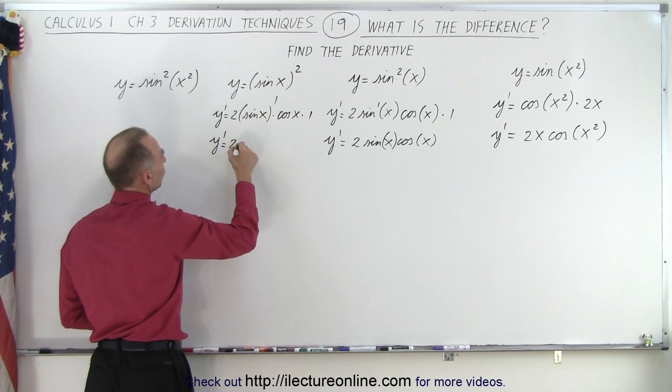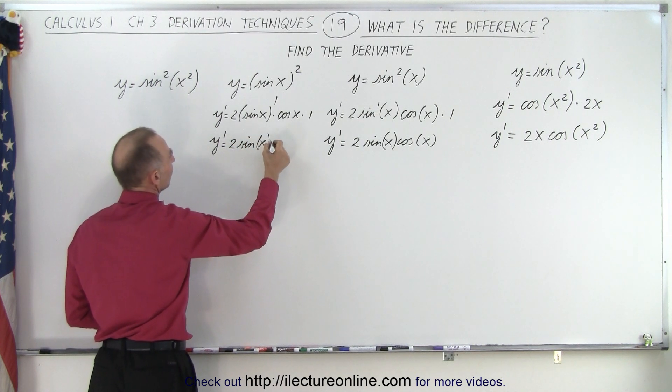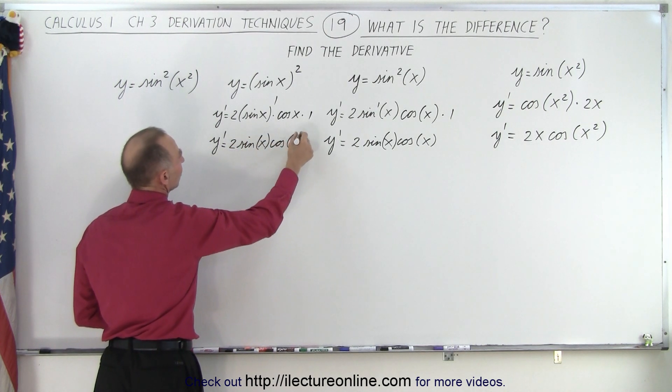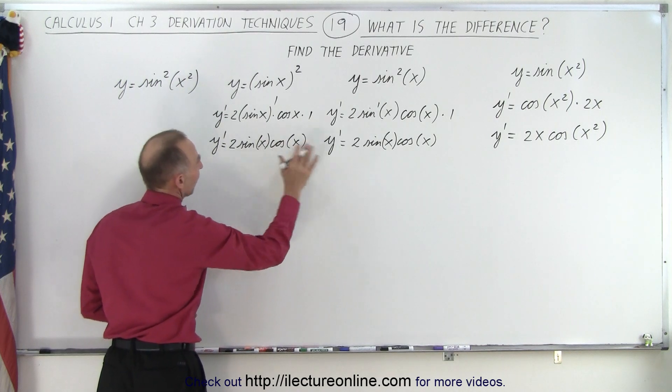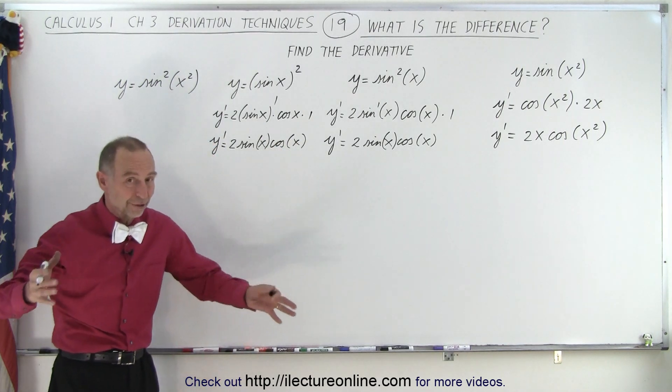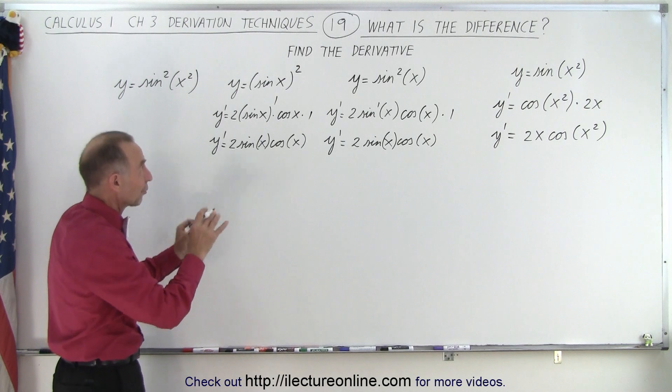y prime equals 2 times the sine of x times the cosine of x. So again, you can see that the derivative has to be the same because there was no difference between the two. It's just a different way of writing it.